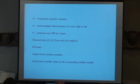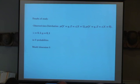I'm going to have variables X, which is going to be a treatment cigarette cessation, randomized to keep smoking or stop. Z is an intermediate blood pressure at one year, Y is an outcome, say heart disease by two years. You observe data on all of these subjects, all are binaries. Capital letters are random variables, small letters possible values. The results of the study, you get to see the joint distribution of these variables, both given X equals one and given X equals zero. So there are eight probabilities, which means the model dimension is six.